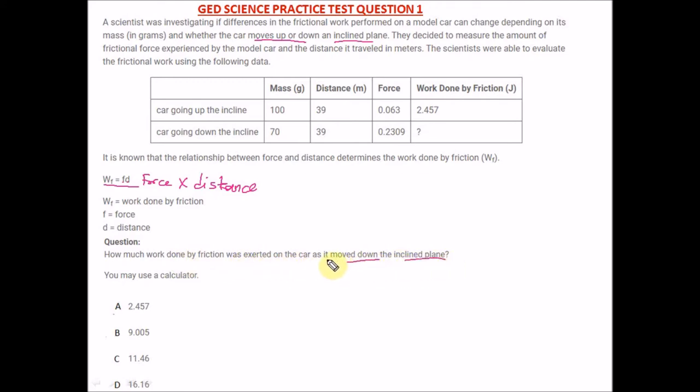The question asks: how much work done by friction was exerted on the car as it moves down the inclined plane? This is car going up the inclined plane, so these are the values for mass, distance, and force. You don't need the mass at all; the formula is just your force times your distance. So the only parameters you're going to look at is your distance and your force. As it moves down the inclined plane, the force is 0.2309 and the distance is 39, so it would be this times this.